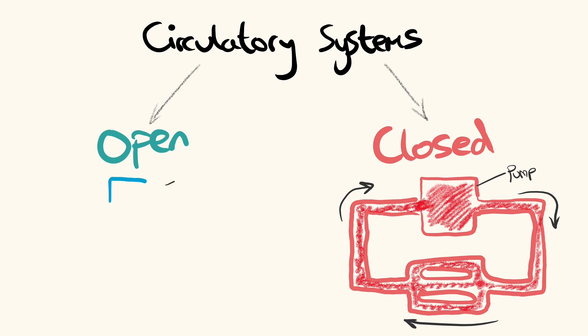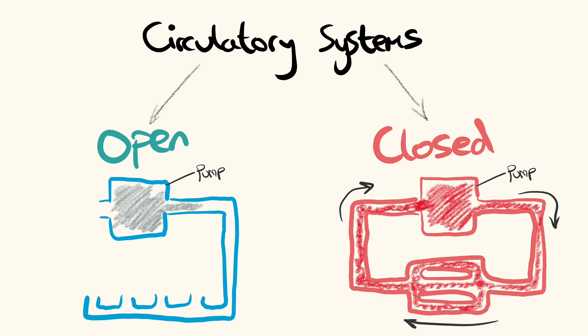Insects have an open circulatory system. This involves a medium being pumped into cavities in the body tissue known as haemocel before being collected and returned to the pump by either veins or pores known as ostea. This is also seen in all arthropods and some mollusks.